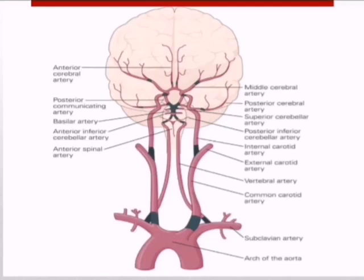Before we start talking about stroke in detail, let's review some cerebrovascular blood supply. As we can see here, the aortic arch branches to the right and left brachycephalic trunk. The right one splits into the right common carotid artery and right subclavian artery, while the left common carotid artery and left subclavian artery ascend directly from the aortic arch.